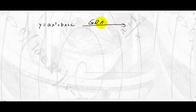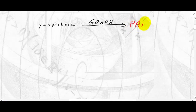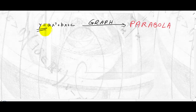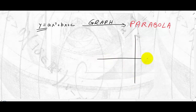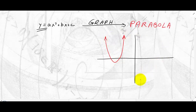The graph of a quadratic equation is called a parabola. A parabola is an object defined in geometry. When the equation is solved for y, there are two types of parabolas: parabolas that open up, or parabolas that open down.